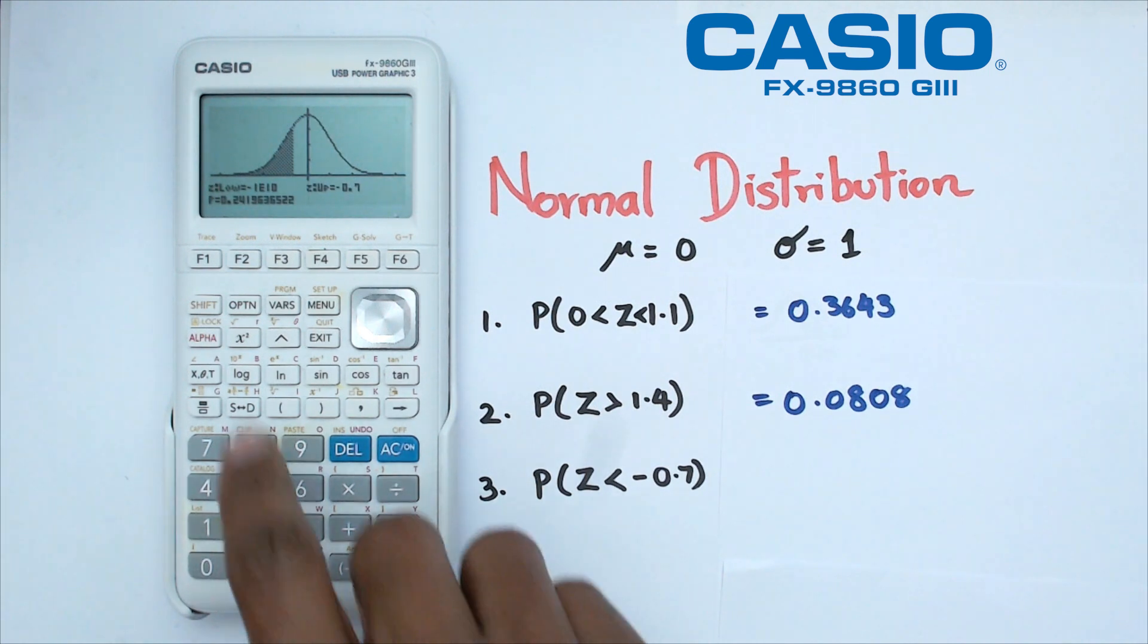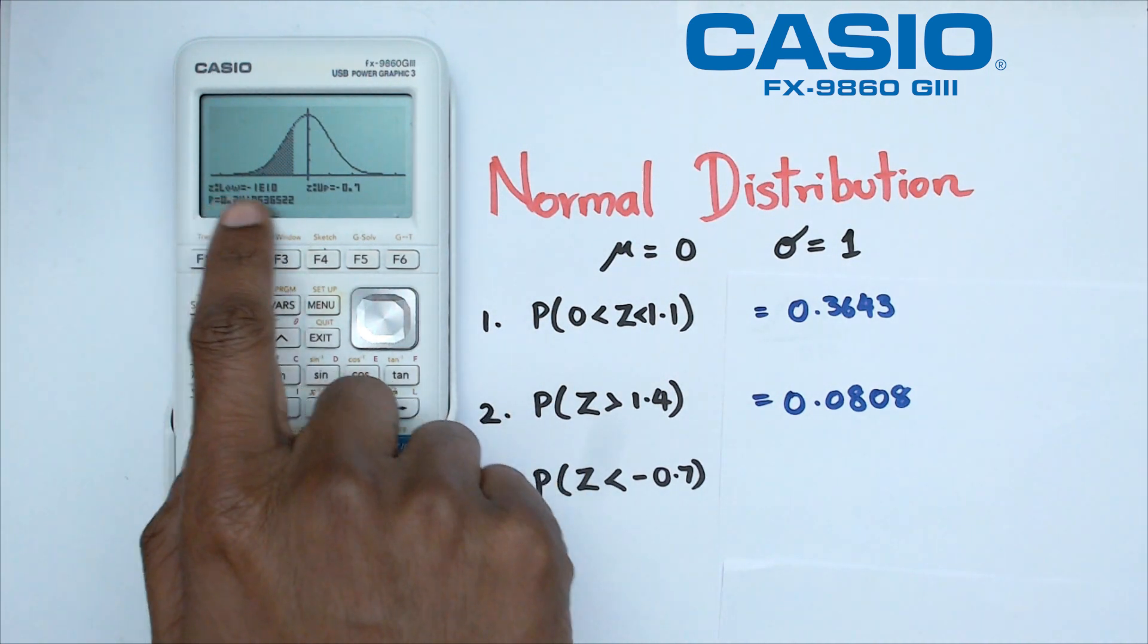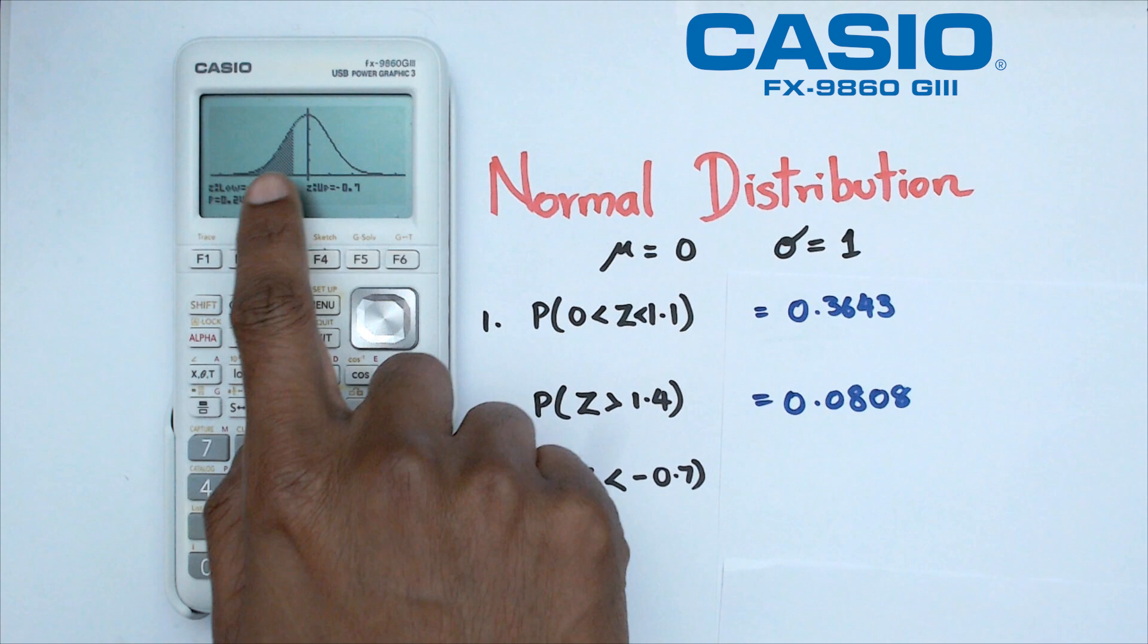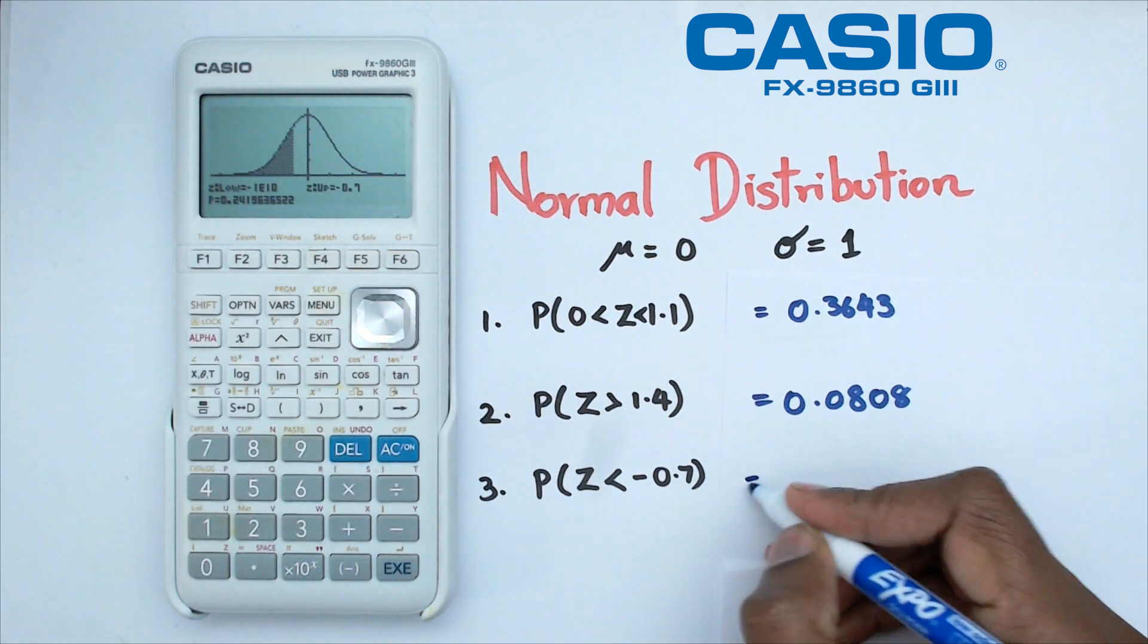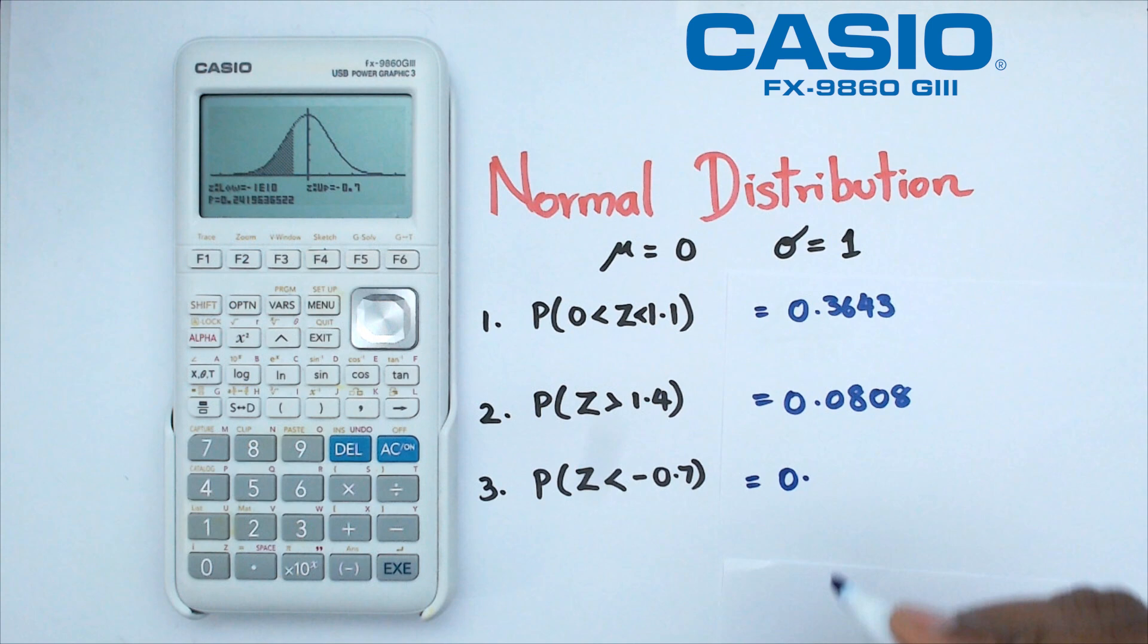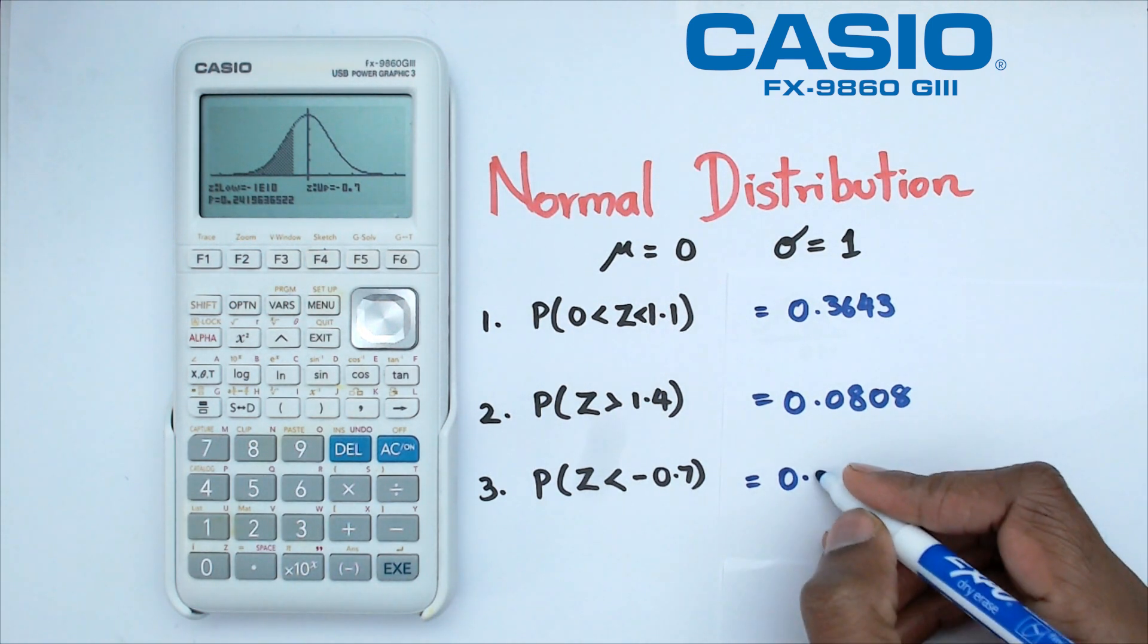So here we go and I've got my lower limit which is negative 1 to the power of 10 and upper limit is negative 0.7 and my probability is 0.24 two four two zero.